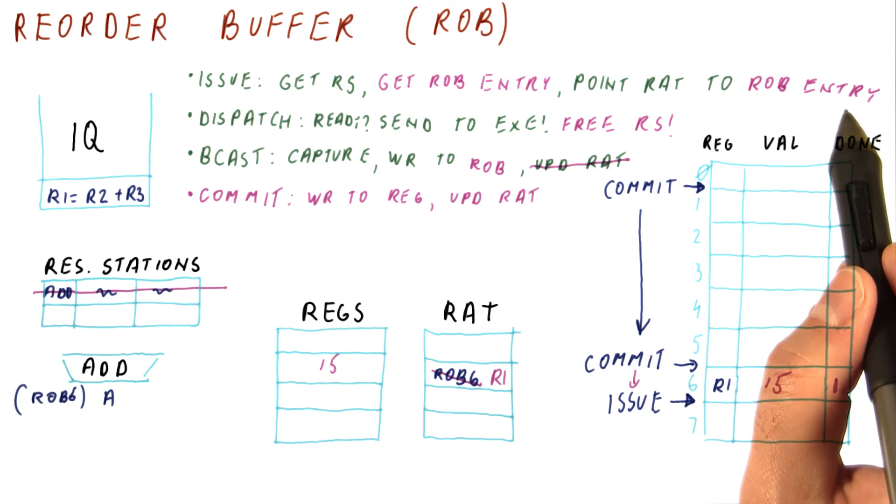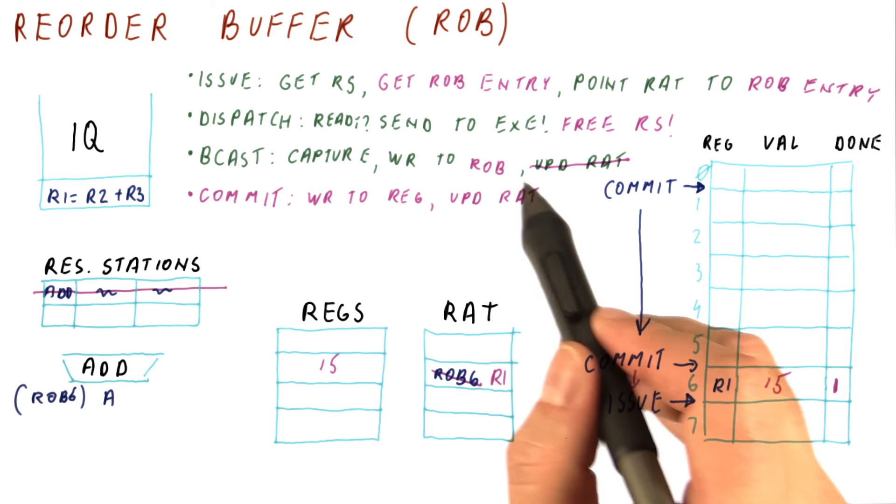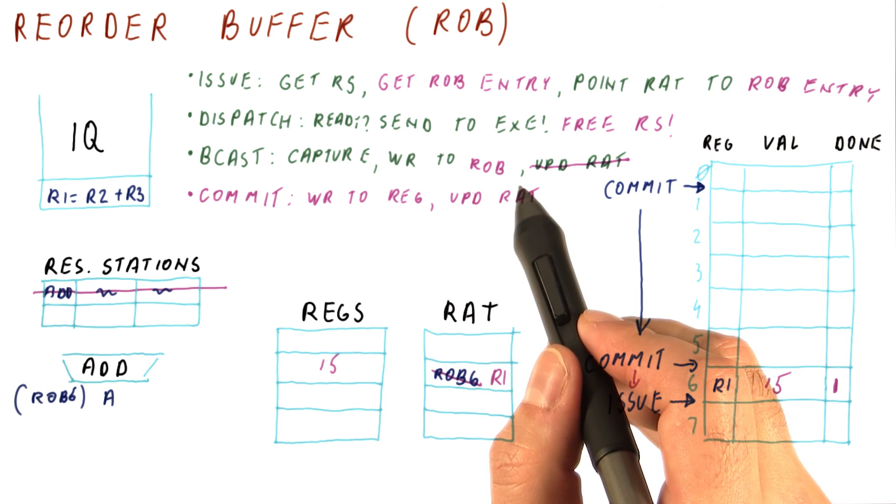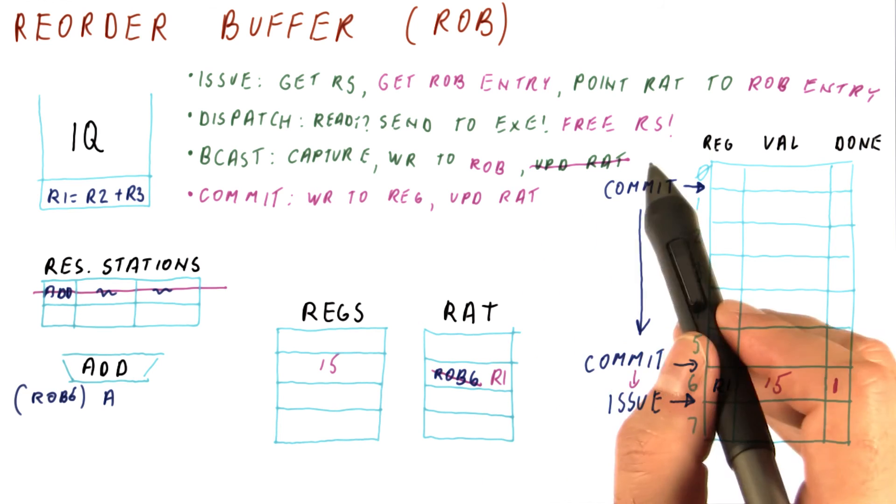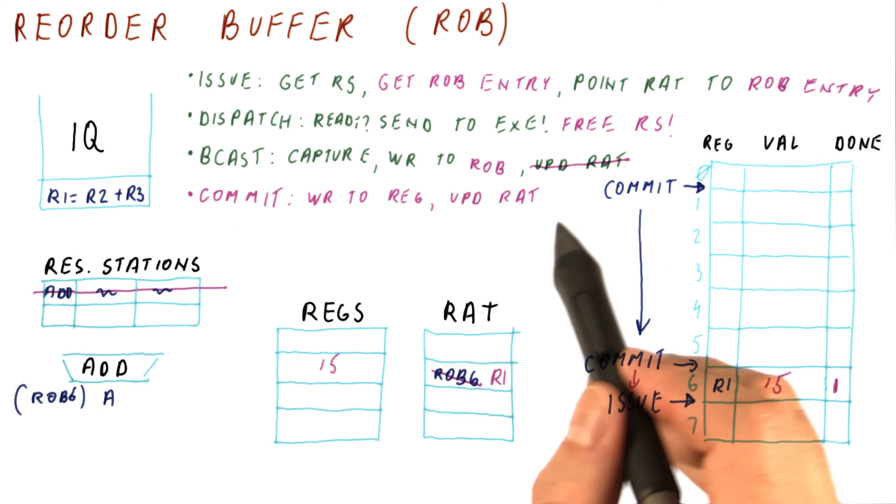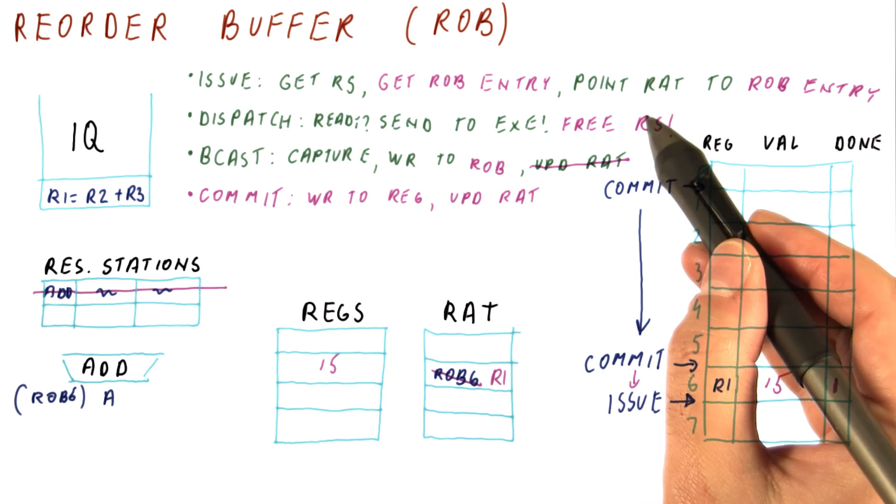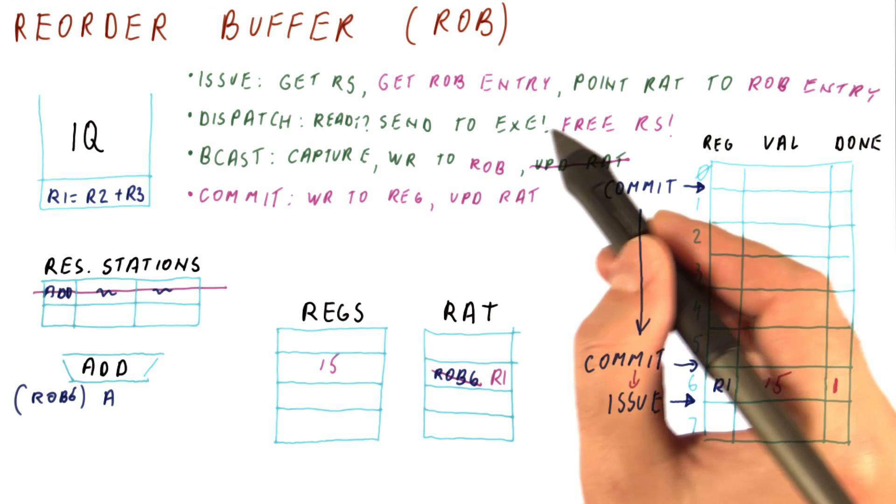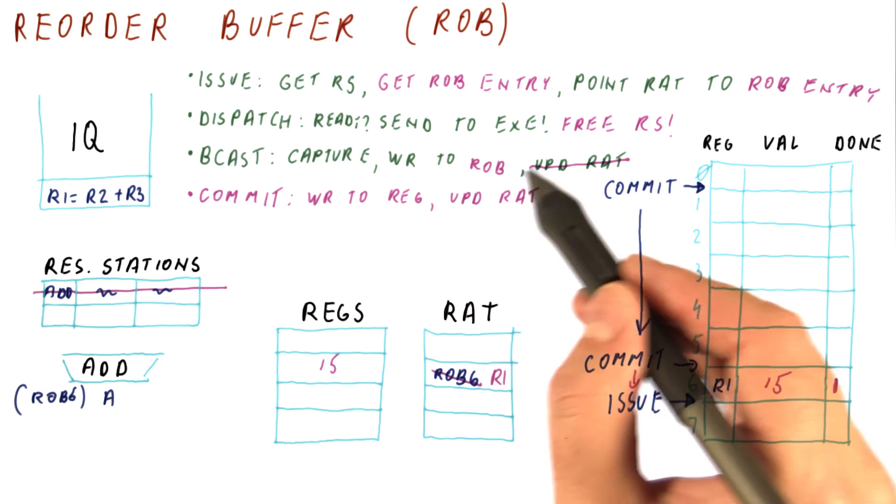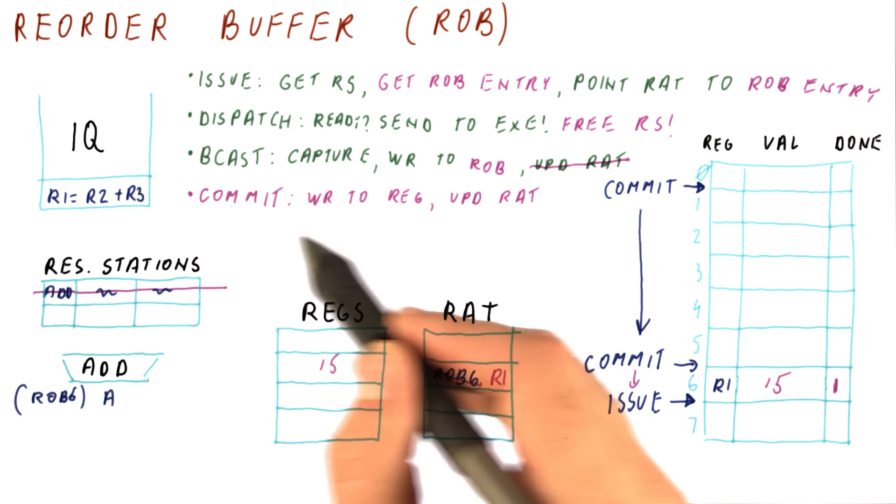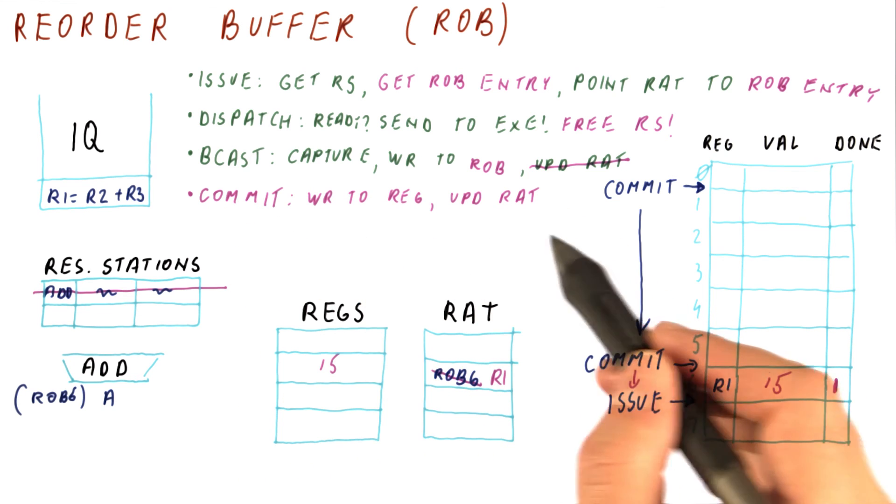Some of the things have changed, like pointing the RAT to the ROB entry instead of the reservation station, writing to the ROB on broadcast instead of the register file. And also, we have added a step here for committing. Also, we can free the reservation station on dispatch, not on broadcast. And finally, we need a new step for actually committing the instruction.